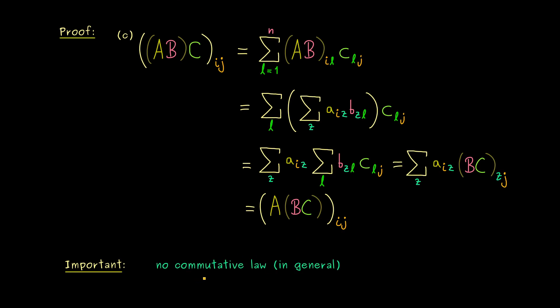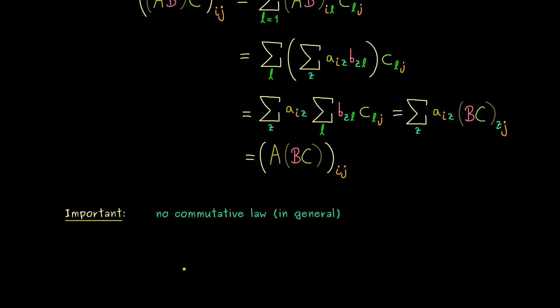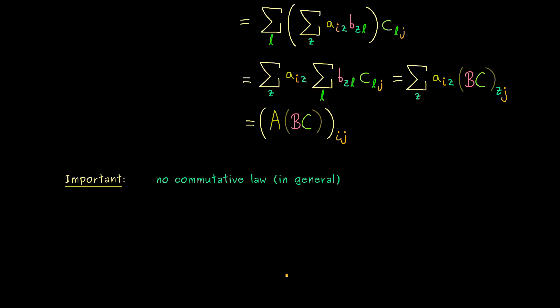Namely, for the matrix product here, we don't have a commutative law in a general sense. This means, in general, it's not allowed to change the order of the matrix multiplication. So in special cases, it could work, but in general, it wouldn't work.